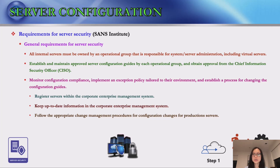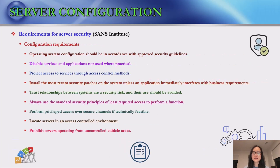Configuration changes on production servers must follow appropriate change management procedures. The SANS Institute template also provides specific configuration requirements: the operating system configuration should be in accordance with approved security guidelines, services and applications that are not in use must be disabled, and access to services should be locked or protected through access control methods such as a web application firewall.